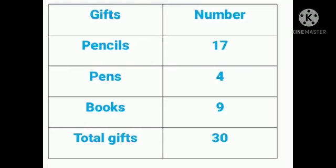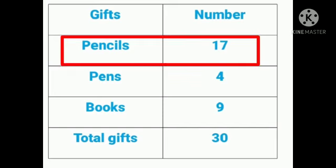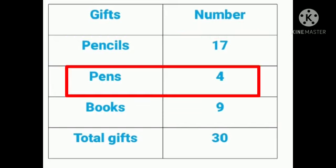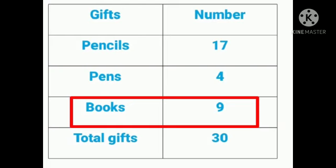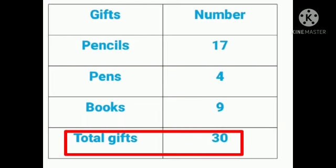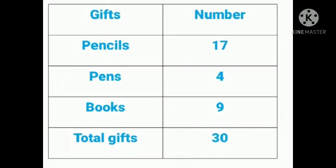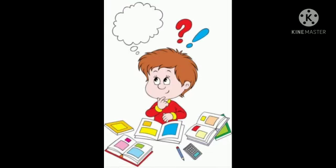By seeing the table we can understand that Sonu received 17 pencils, 4 pens, and 9 books, making a total of 30 gifts. Making a table makes it easy to understand the collection of data.